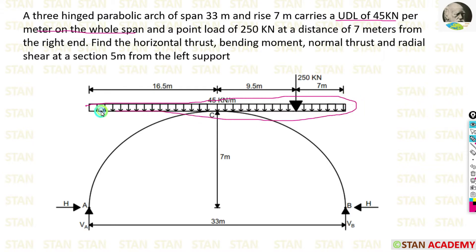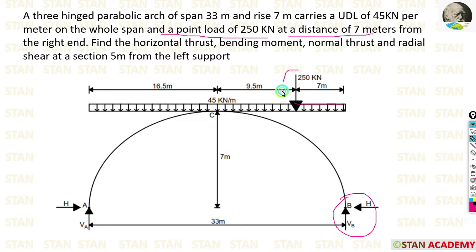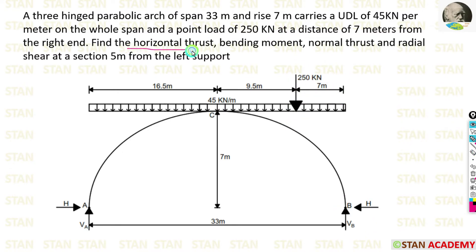The UDL of 45 kilonewton per meter is drawn for the whole span. The arch also carries a point load of 250 kilonewton at a distance of 7 meters from the right end. We need to find the horizontal thrust, bending moment, normal thrust, and radial shear at a section 5 meters from the left support.